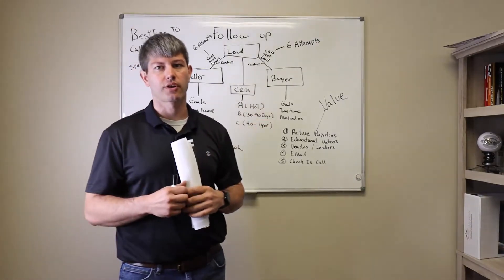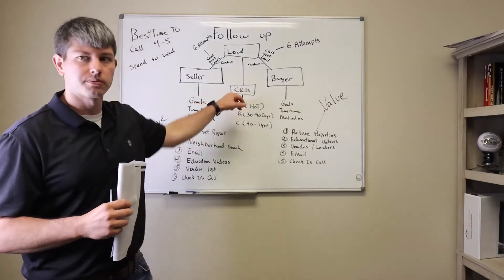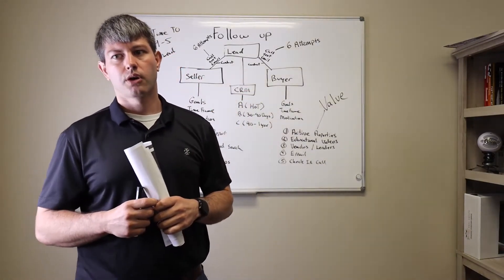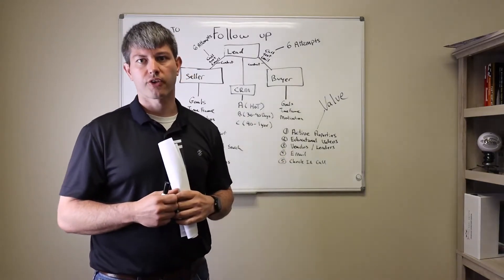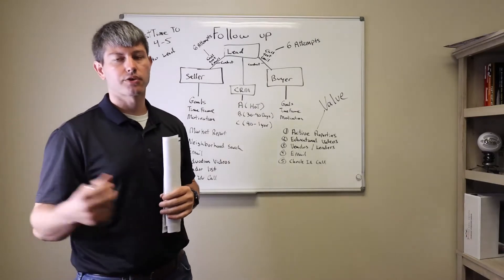Those are the three things we look for in the initial contact - goals, timeframe, motivation. From there, we want to put them in our CRM. We use KV Core or Ideal Office, and we have the CRM Perfect Storm. Our agents use either one, whichever they prefer. They go in our CRM and then we categorize them based on their motivation and timeline.